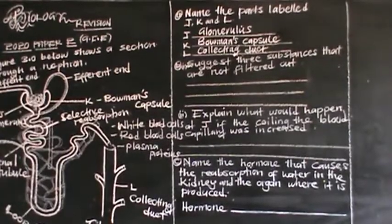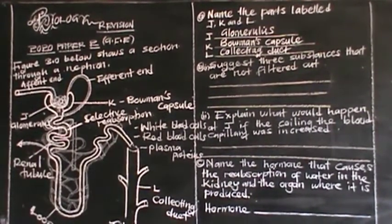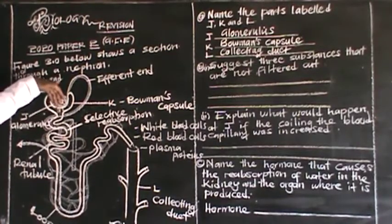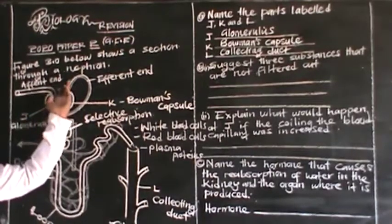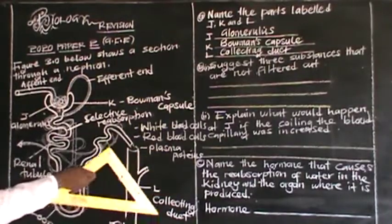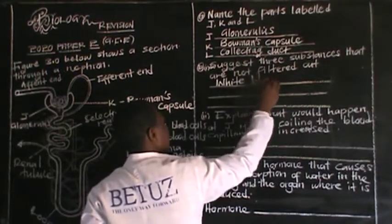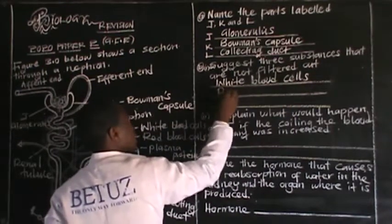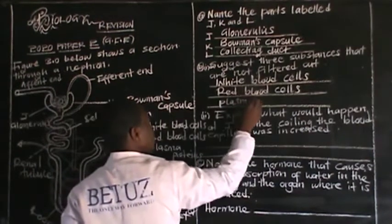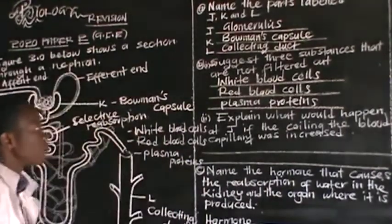For question B, Roman numeral 1, they suggest three substances that are not filtered out. Remember, substances with larger molecules cannot be filtered through the glomerulus. Substances such as red blood cells, white blood cells, and plasma proteins remain in the blood and go with it.